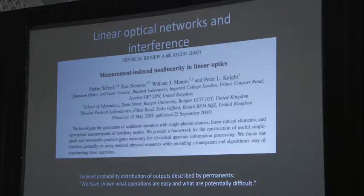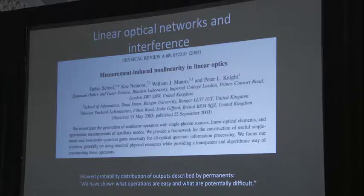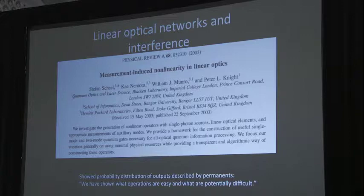So forgotten papers. So here's one that I forgot, even though I'm one of the authors. We looked at the requirements for linear optical networks. This is in the ramp up towards what became the KLM scheme. So Stefan Scheel, Kae Nemoto, Bill Munroe, and me. And we looked at the resources necessary to implement a set of unitary transformations. And there's a remark in here, we showed the probability distribution of outputs described by permanents. And we've shown what operations are easy and what are potentially difficult. And many people have forgotten that we did this back in the dark ages, but we did.